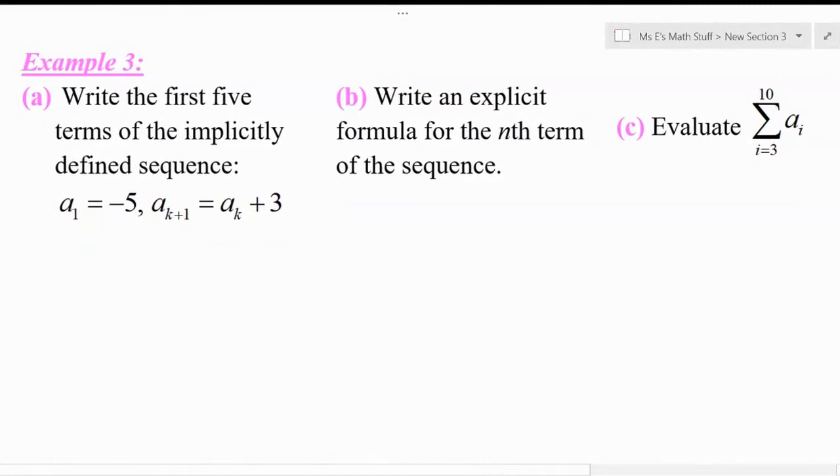Find the first five terms of the implicitly defined sequence: a sub one equals negative five and a sub k plus one equals a sub k plus three. For part B, I want you to write an explicit formula for the nth term of the sequence. That's where you figure out what a sub n is. And then for part C, I'd like for you to evaluate the sum as i goes from three to ten of a sub i. See how it goes. Check in with me in the next and last video for this section.